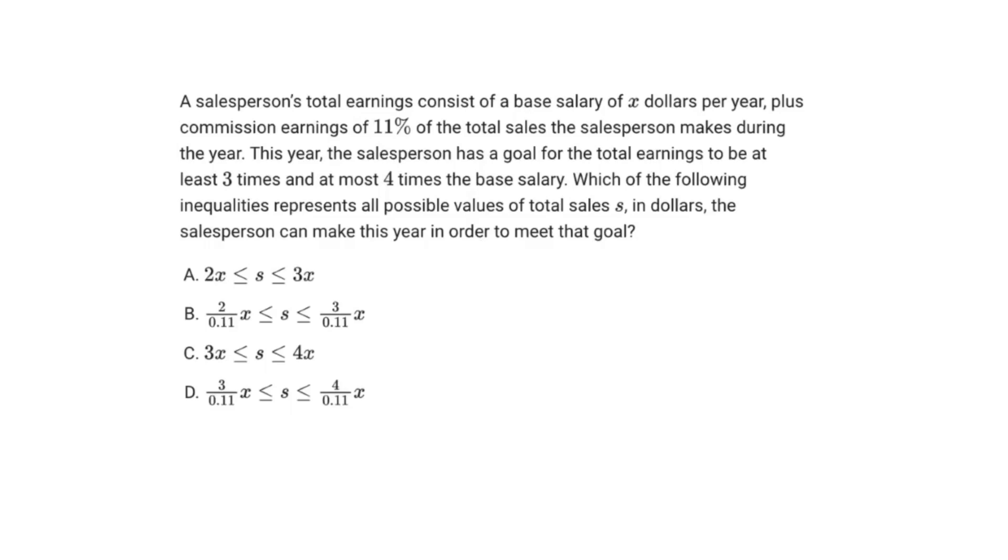All right, so we're back on the SAT math grind. This question says a salesperson's total earnings consists of a base salary X dollars per year plus commission earnings of 11% of the total sales the salesperson makes during the year.